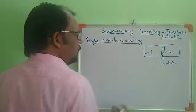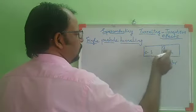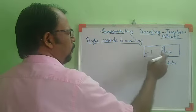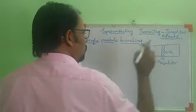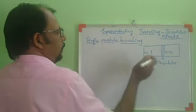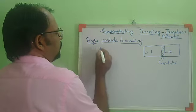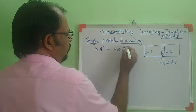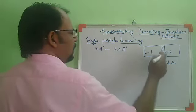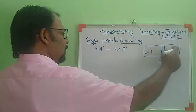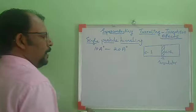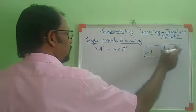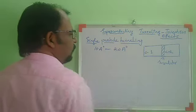When we separate two conductors by using an insulating material, and the thickness of insulating material is sufficiently small, then there is a probability of tunneling of electrons from one material to another material. The thickness of insulating material should be very small — of the order of 10 to 20 angstrom. The electron can tunnel from one conductive material to another through the insulating medium, and the transmission probability depends on the thickness of the insulating material.